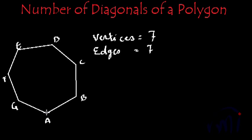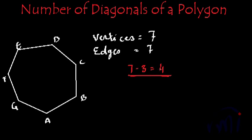I cannot draw a diagonal from point A to point A, because it's the same point, and I cannot draw a diagonal from point A to point B either, because that will coincide with the line AB. And I cannot draw a diagonal from point A to point G as well, because that will also form the edge GA. So the number of diagonals I can draw from any point will always be the number of vertices minus 3. So the number of diagonals drawn from point A will be 7 minus 3, that is 4. This will be the case for all polygons.